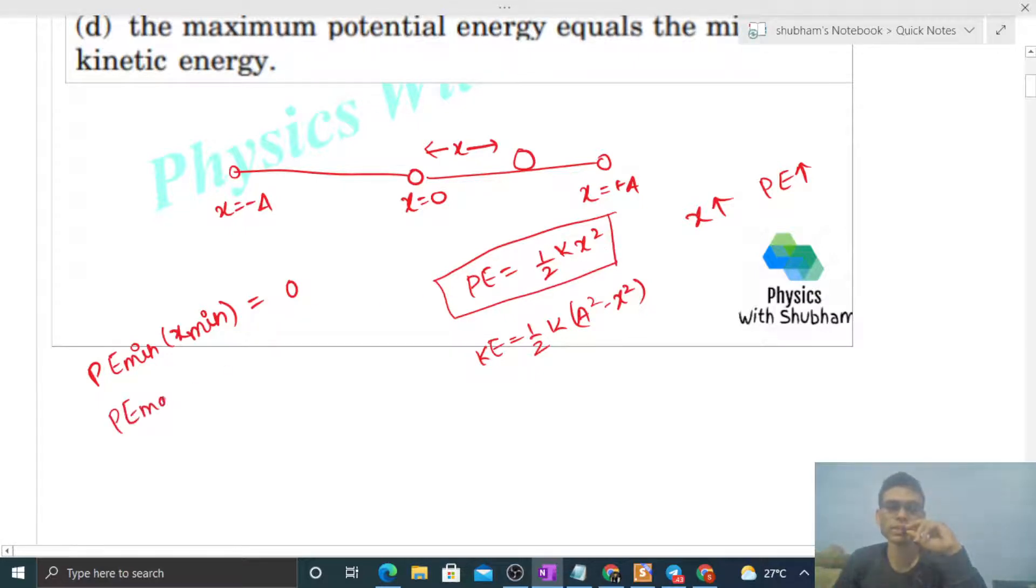Similarly, potential energy maximum will be where x is maximum. And maximum value of x is A, that is amplitude. So that will be half of k into, putting A in place of x, A square.